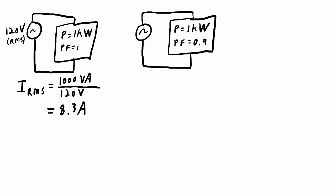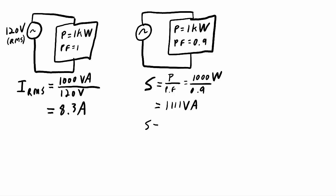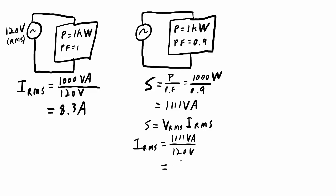Now if the power factor drops to 0.9 while real power stays at 1 kilowatt and voltage remains 120 volts RMS, the apparent power becomes P over PF — 1000 watts divided by 0.9 — which is 1111 VA. The RMS current is then 1111 VA divided by 120 volts, giving 9.26 amps. The reactive element requires more current even though real power is unchanged.